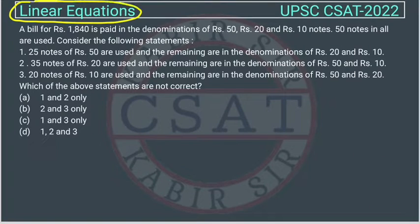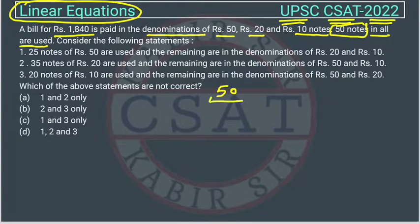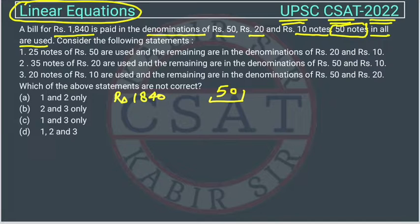This is a question from the chapter on linear equations, asked by UPSC in their CSET paper of 2022. A bill of rupees 1840 is paid in denominations of rupees 50, 20, and 10 notes. A total of 50 notes are used. Three statements are given, and we need to check which one is correct regarding how the amount was paid.